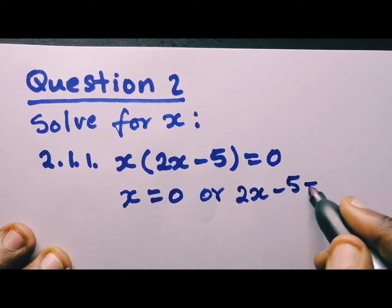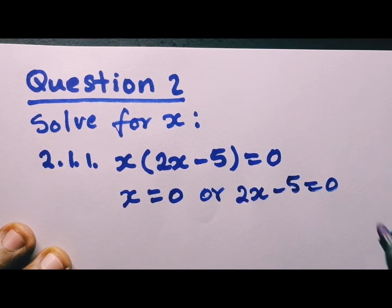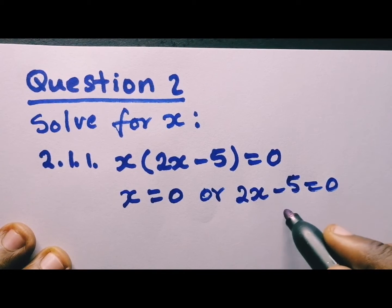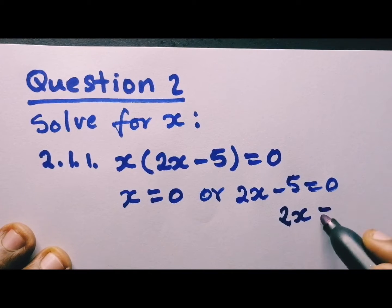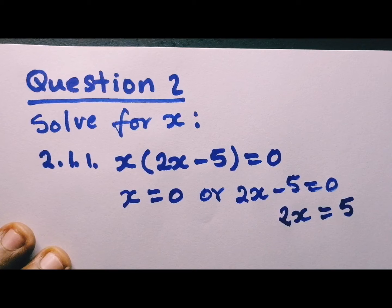2x minus 5 equal to 0. And then from here, you solve for x. Take this to the other side. Remember, the sign always changes. Now it's going to be positive.